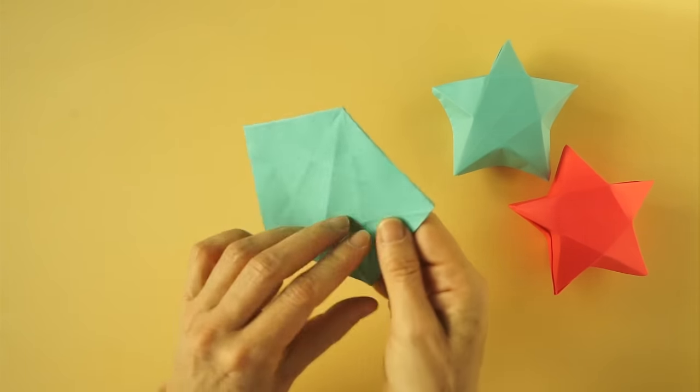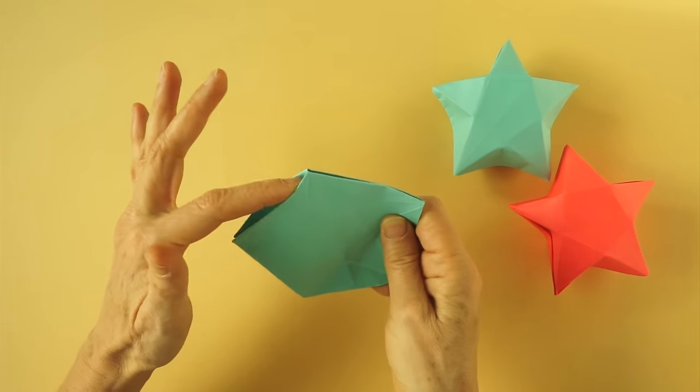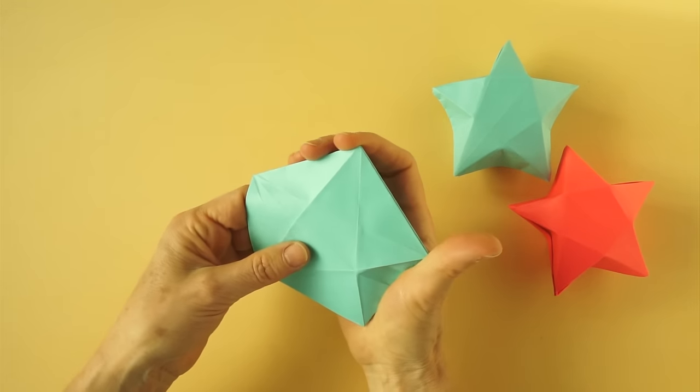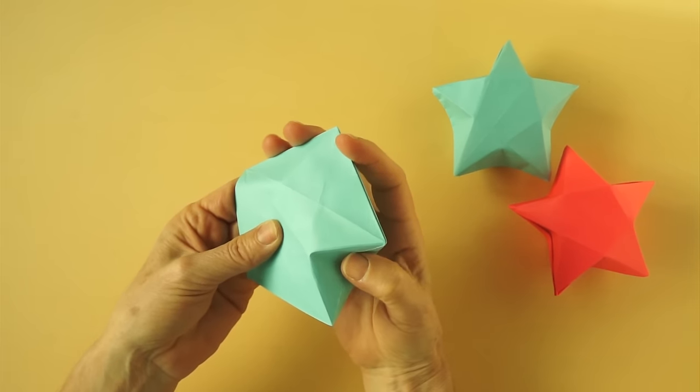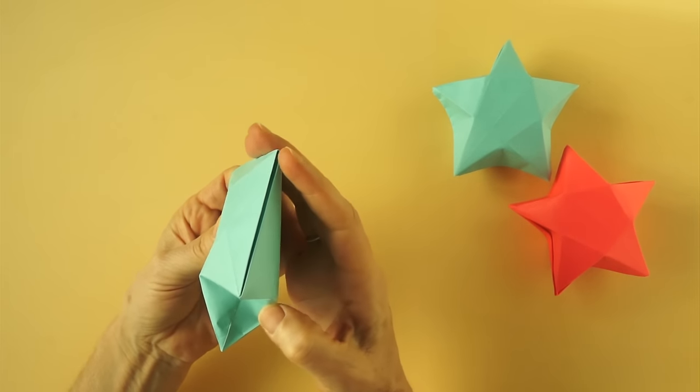Turn this back to the side. This is the opening. Insert our fingers here. Press from the center of each side. Make it three-dimensional.